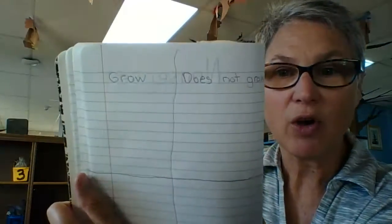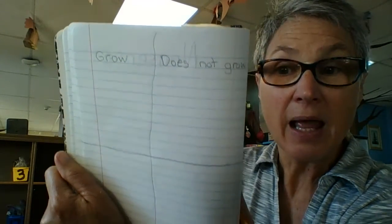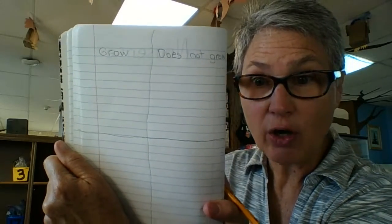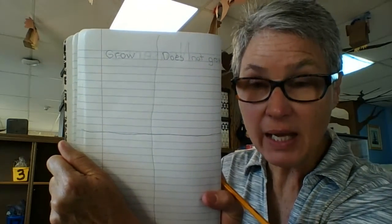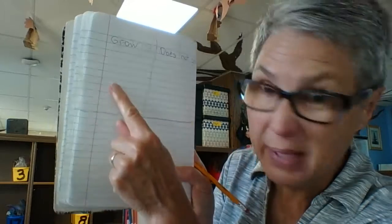Now I've got grow on one side and does not grow on the other. Then I need to take a look around my house. I need to find two things that do grow. I'm one of them. So I'm going to put me in the top.